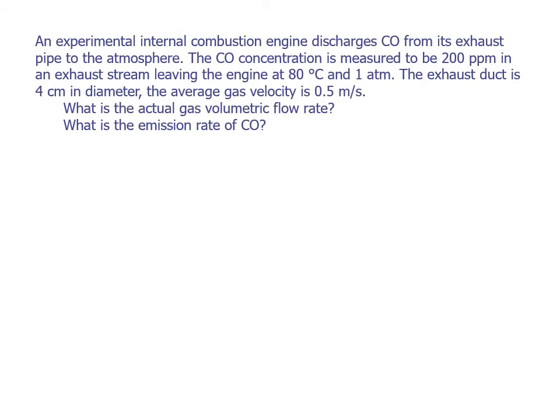In this problem, we'll use the mass flow rate to calculate an emission rate from an engine. This engine releases carbon monoxide in its exhaust pipe. The concentration of carbon monoxide in the exhaust is 200 ppm, the temperature of that exhaust is 80°C, and the pressure is 1 atmosphere. The exhaust duct is 4 centimeters in diameter and the average gas velocity is 0.5 meters per second.